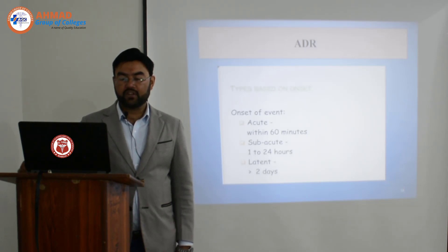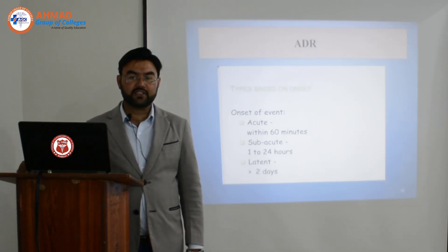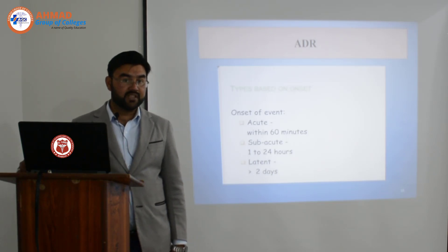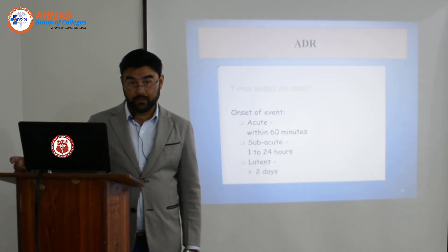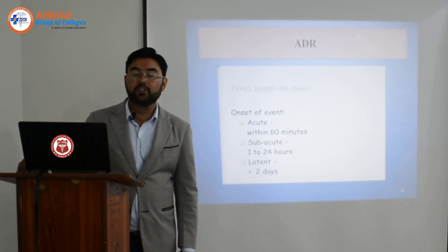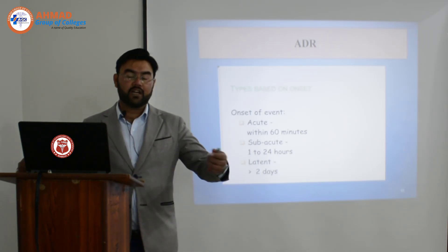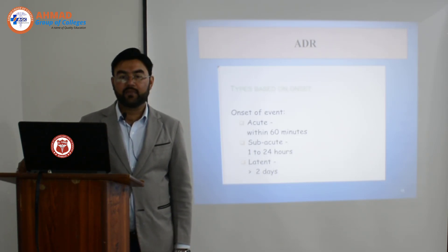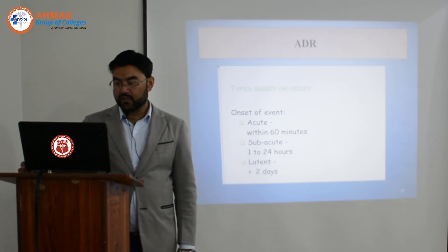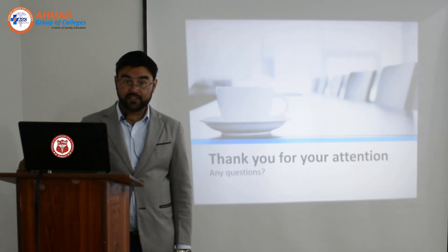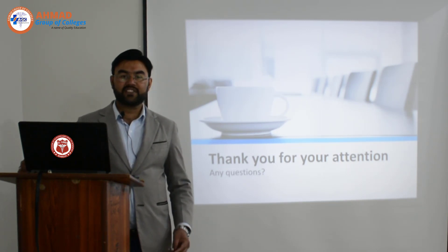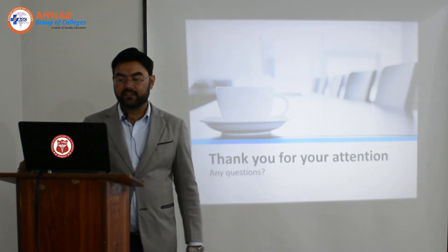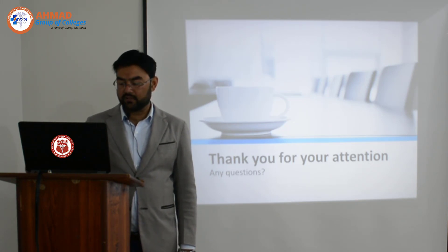There are also types based on the onset of adverse drug reactions — three types: acute, which occurs within 60 minutes; sub-acute, which may occur after two days. That is the end of this lecture. We have covered the basic terminologies of Chapter 1, while the other two or three parameters will be discussed in the next lecture. Thank you very much.